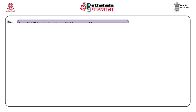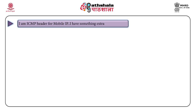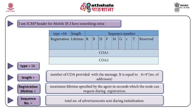Mobile IP uses ICMP messages for agent advertisements, but there are some mobility extensions provided to reflect the mobility of the agents. The extensions include: type equal to 16 to notify that it is an agent advertisement; length equal to the number of care of addresses provided, calculated as 6 plus 4 multiplied by the number of addresses; registration lifetime, which is the time in seconds for which the agent is negotiating with the mobile device; and sequence number, which is the total number of advertisements sent during initialization.